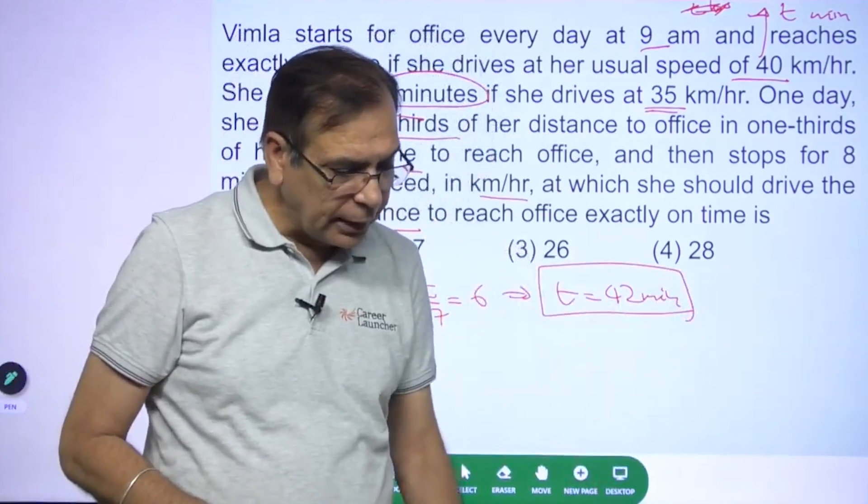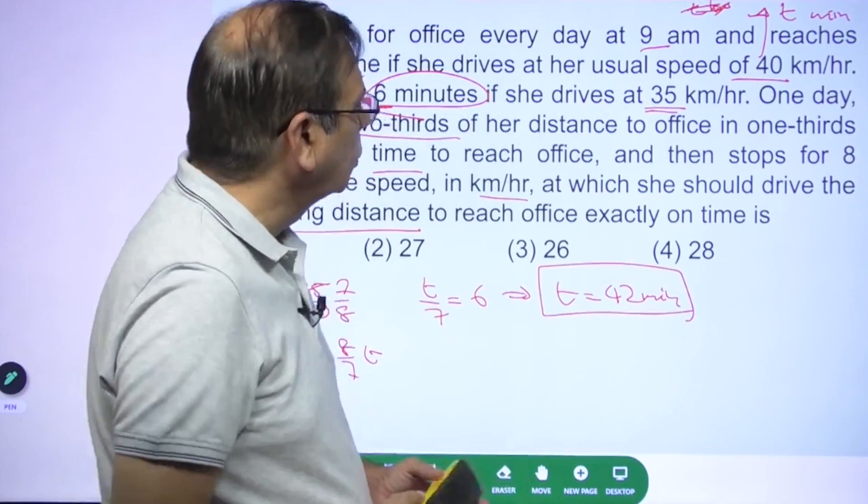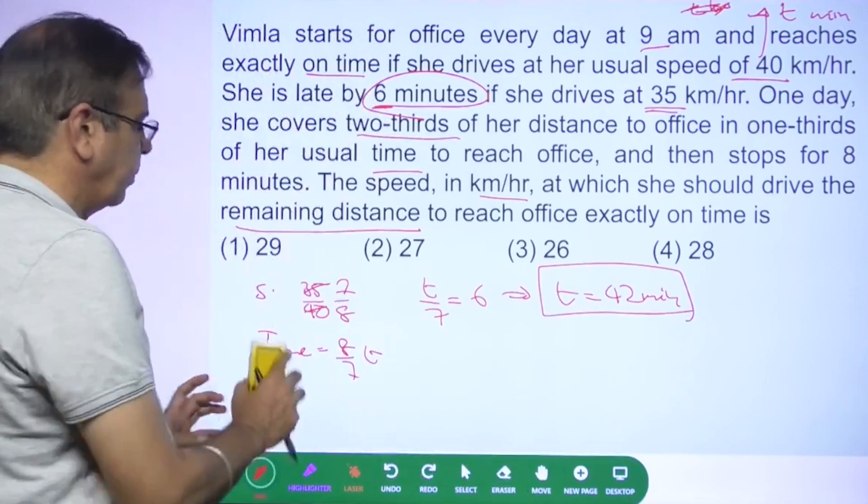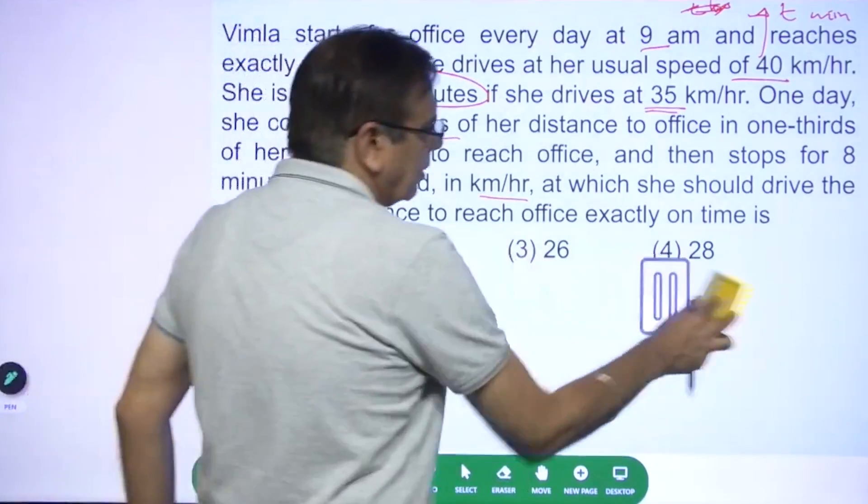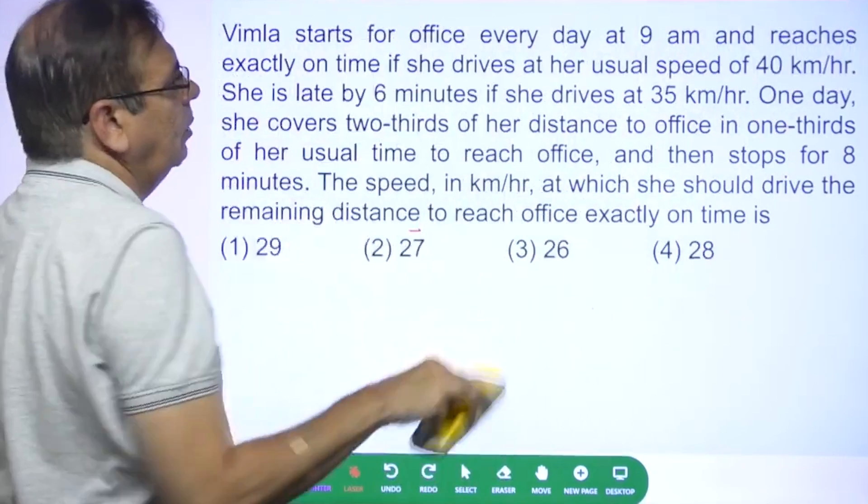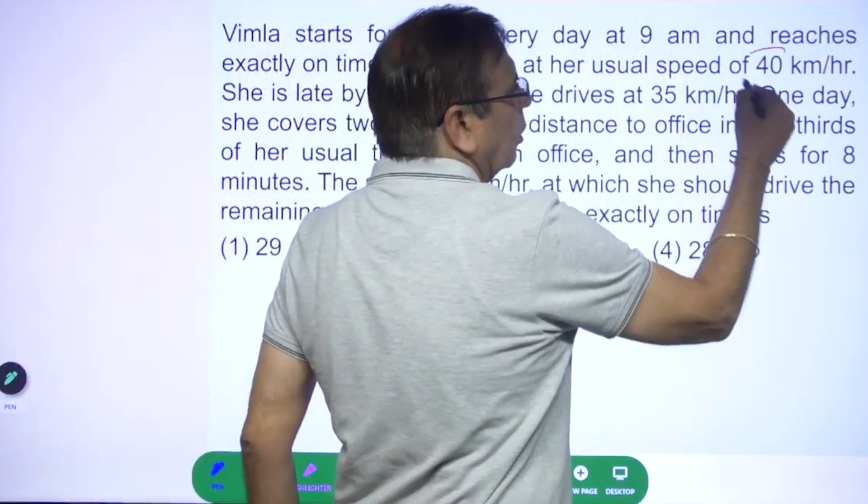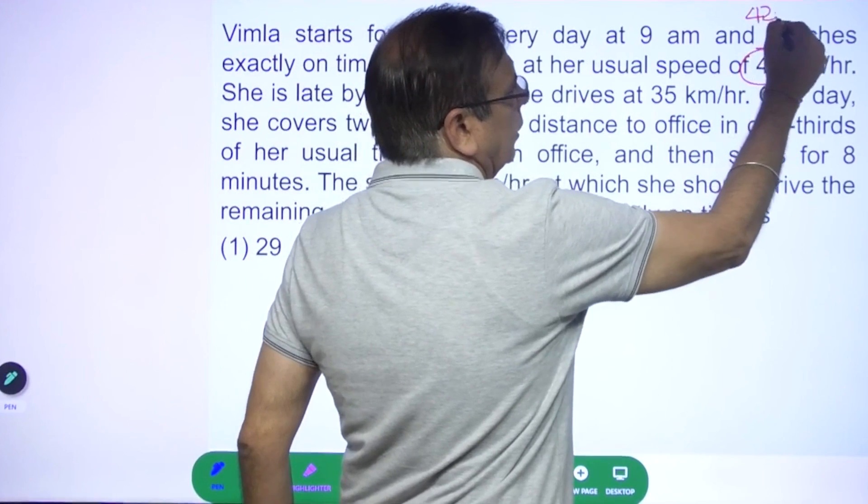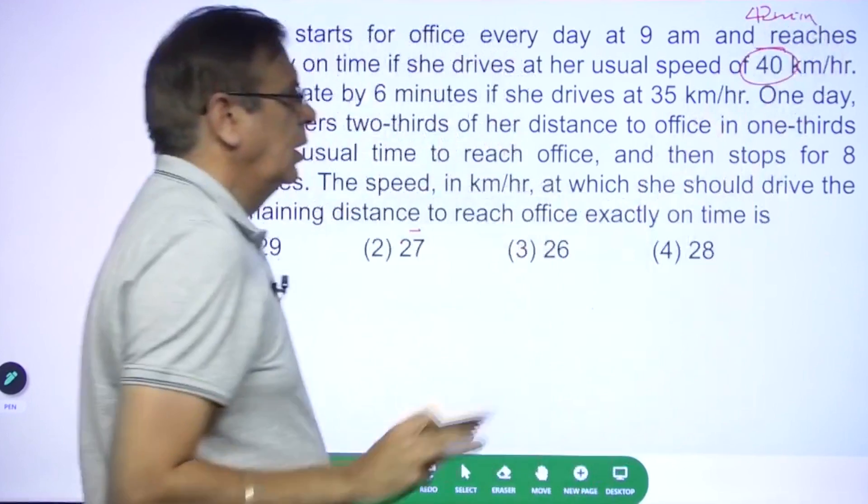Earlier she was taking 42 minutes to reach her destination at a normal speed. So what do we have right now? At a speed of 40 kilometers per hour she takes 42 minutes to reach her destination. Now what happens?